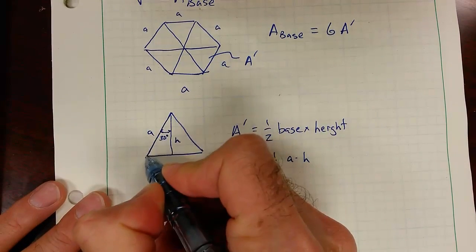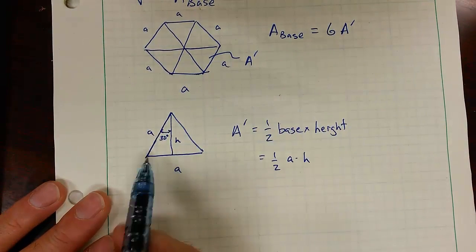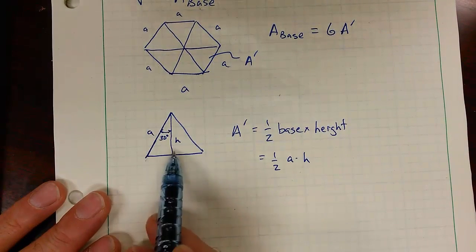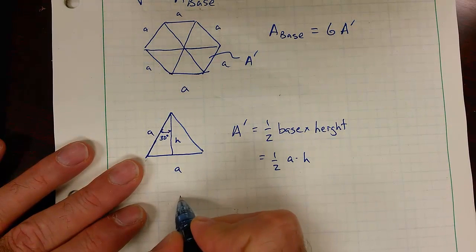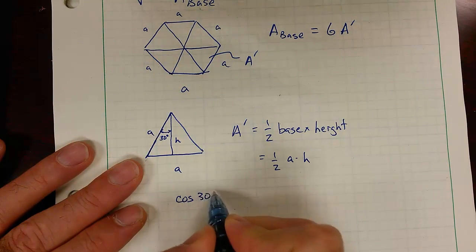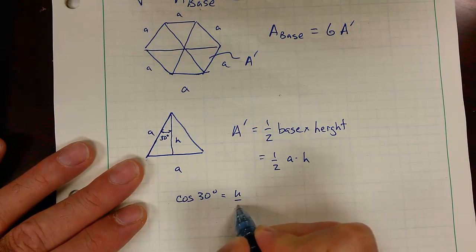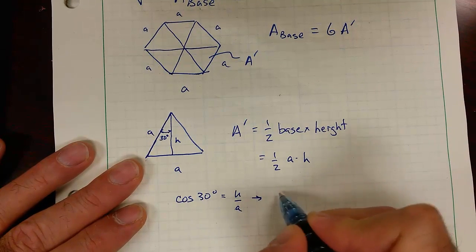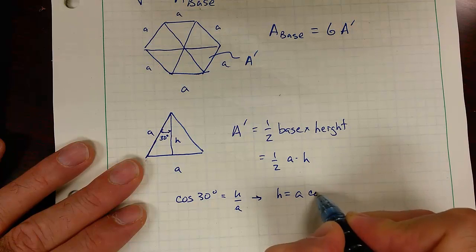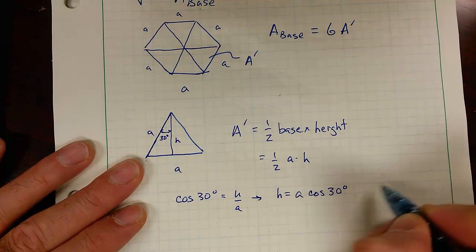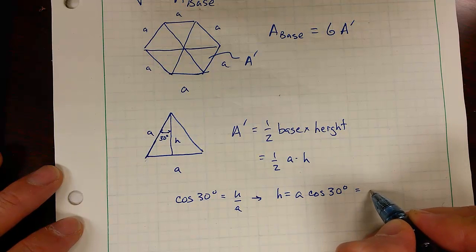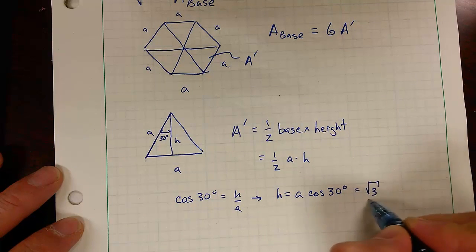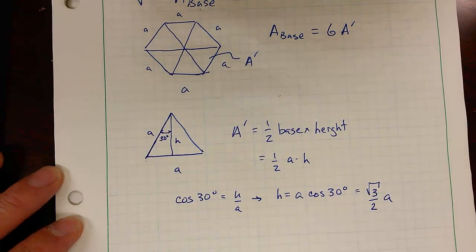The hypotenuse of this little triangle is length a, and that is the height. Then I have a relationship between a and h that looks like cosine 30 degrees equals h over a. That means h is a cosine 30 degrees. And the cosine of 30 is the square root of 3 over 2. So I have the square root of 3 over 2 a.